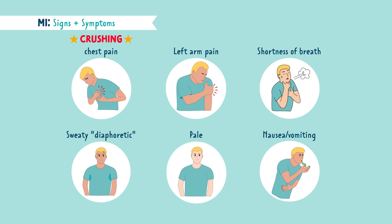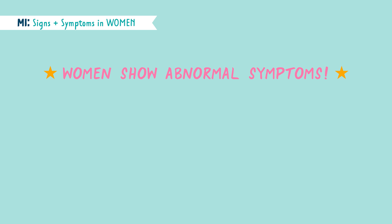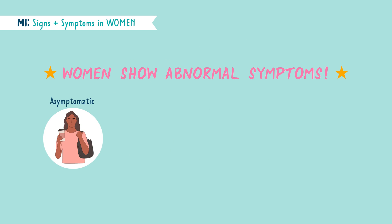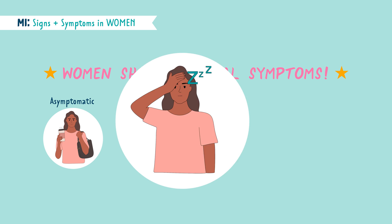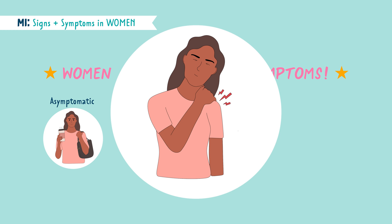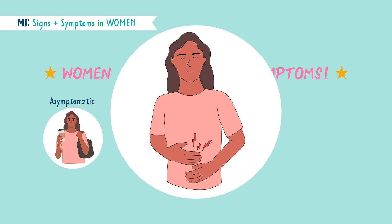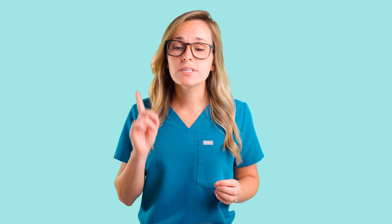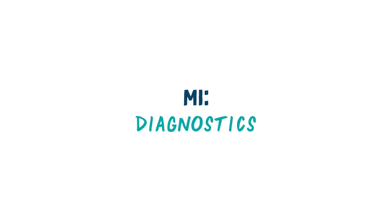It's important to know that women may present with different symptoms. Some are asymptomatic and others show abnormal signs like fatigue, shoulder discomfort, and even heartburn. All these things are just normal everyday life symptoms and can be easily overlooked. So be on the lookout for these symptoms on NCLEX questions, specifically in women.